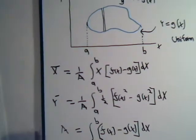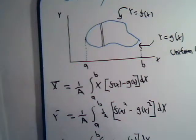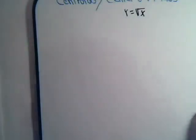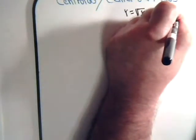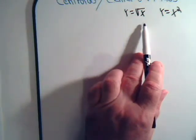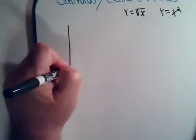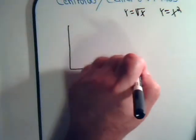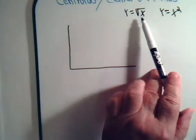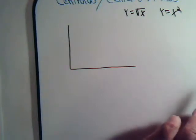Let's apply this to a specific problem. Suppose we have the curves y equals the square root of x and y equals x squared. We want to find the region in between these two curves and then find the center of mass in that region. It's pretty obvious that when x is zero both are zero, and when x is one both are one, so they intersect at (0, 0) and (1, 1).